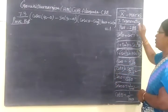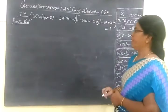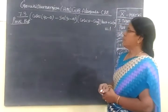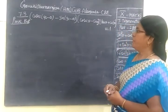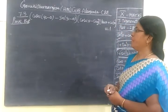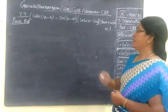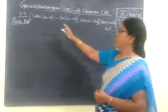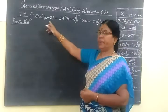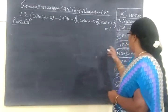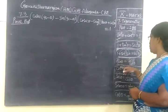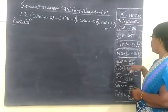Next we have example 7.3. Cosine of 90 minus theta is given right there — cosine of 90 minus theta equals sine theta.